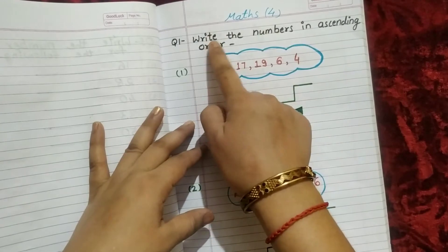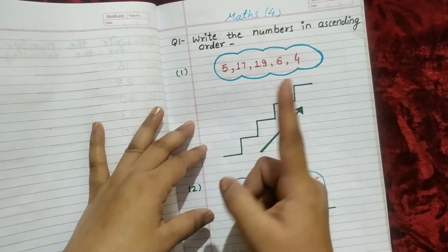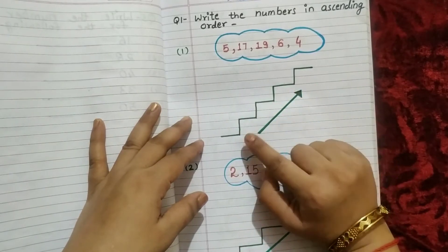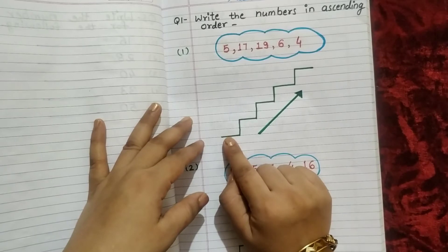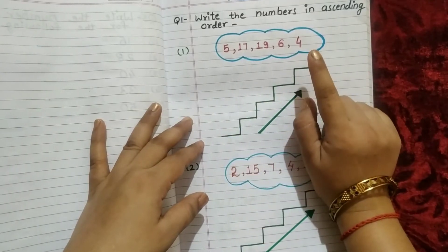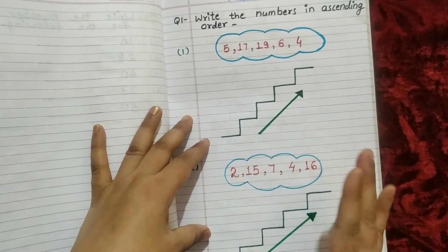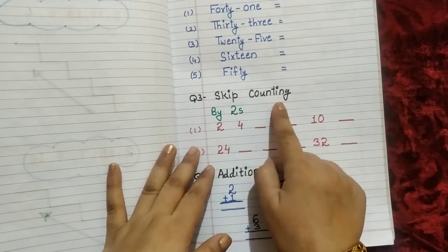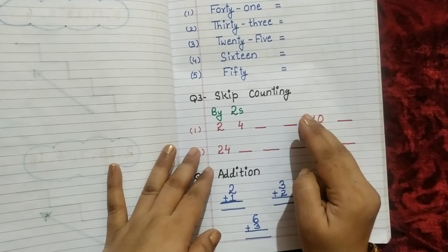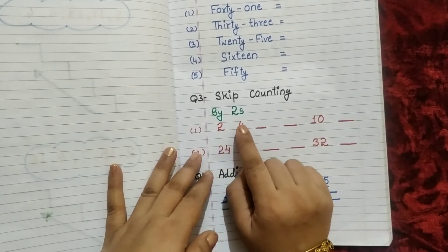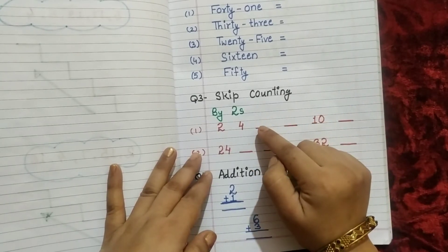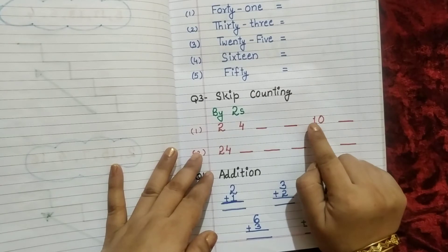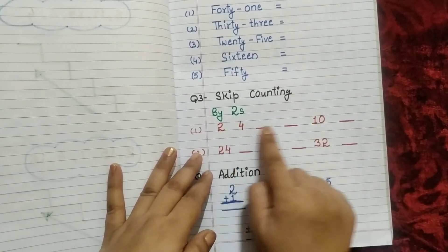This is my fourth paper. Question number 1: Write the numbers in ascending order — increasing order. The smallest number comes first and we go up to the biggest number last. Question number 2: Write in figures — I have given the spelling or number name and the child writes the numeral. Question number 3 is skip counting by 2s: 2, 4, then skip to 6, skip to 8, skip to 10, skip to 12, and so on.